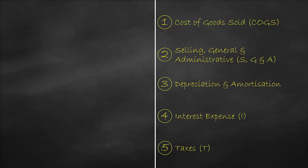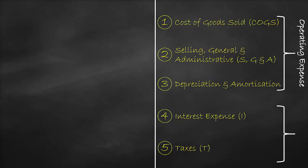Any manufacturing company must have the first three expenses for their operation. Therefore, we call the cost of goods sold, selling and general administration expense, as well as depreciation and amortization as operating expenses. If a firm does not have debt, it does not have to pay interest, and sometimes firms do not pay taxes due to government investment incentives. Consequently, the last two expenses are called non-operating expenses.